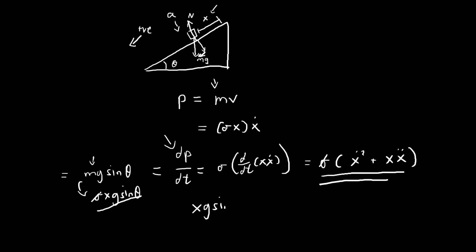So we have xg sinθ = ẋ² + xẍ. We're trying to find the acceleration x-double-dot. At this point, the only way to do it seems to be solving this differential equation, which seems quite difficult — but there's actually a trick we can use.